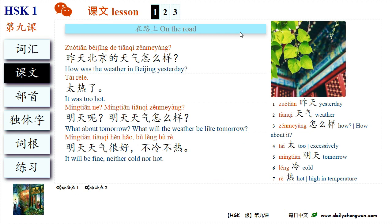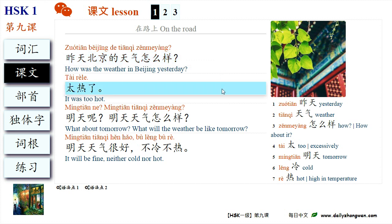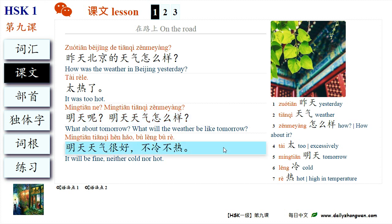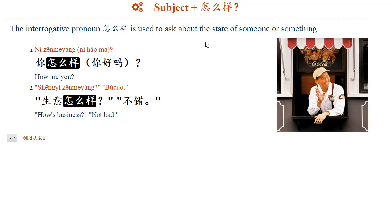Now, let's learn dialogues and grammar points. 在路上: 昨天北京的天气怎么样? 太热了。 明天呢? 明天天气怎么样? 明天天气很好，不冷，不热。 The interrogative pronoun 怎么样 is used to ask about the state of someone or something.